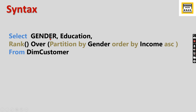The syntax goes like this: a SELECT statement with gender and education, and a FROM clause. The requirement is — from a customer table you have gender and education, and within each gender you need to partition and rank the education categories. For example, within male and female there are three education categories and you need to rank them one, two, three within each group.